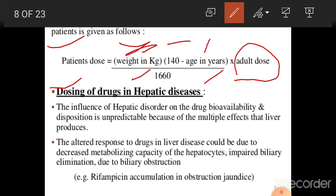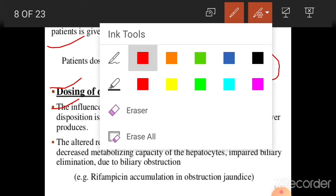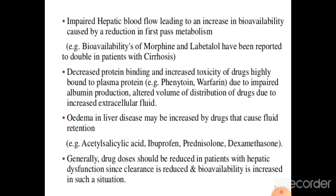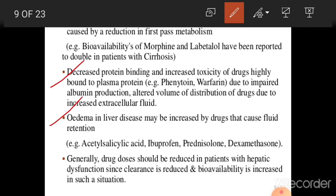Dosing of drugs in hepatic disease: hepatic disorder influences drug bioavailability and disposition in an unpredictable manner because of the multiple effects the liver produces. If there is hepatic or liver disease, drug therapy will slow down because enzymatic degradation will affect the drug. For example, rifampicin may accumulate in obstructive conditions. When accumulation occurs, drug concentration increases because the drug does not pass easily via hepatic metabolism.